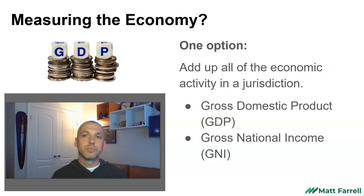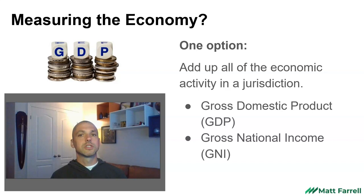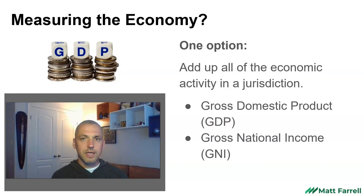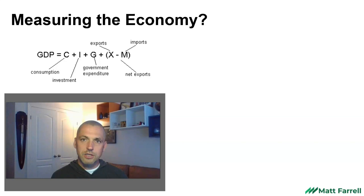GDP is taking the sum of all the things produced in an economy. Another way of looking at that same concept is called gross national income, or GNI. Both are calculated the same way — it's really just a difference in terminology. GDP is popular with some agencies, while the World Bank likes to use gross national income. They can be used interchangeably as they more or less refer to the same thing.